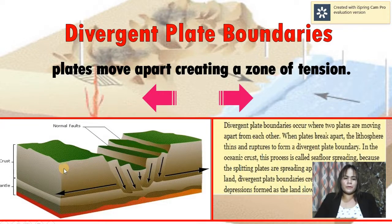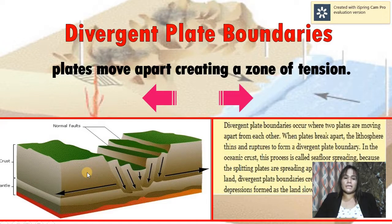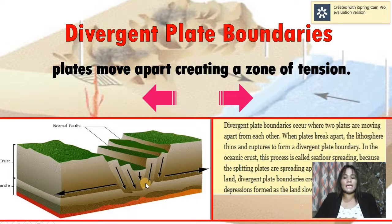As you can see in the figure here, the two plates — both are continental plates — they tend to move apart, going in separate ways. If this kind of plate boundary happens in a continental plate, it will create a rift valley or deep valley depression.